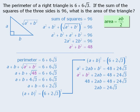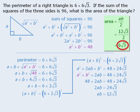From here, if we divide both sides by 2, we get a times b equals 12 root 3. Now, to find the area of the triangle, we need to find the value of ab. And we now know that it equals 12 root 3. So finally, when we divide 12 root 3 by 2, we get 6 root 3. So this is the area of the triangle.